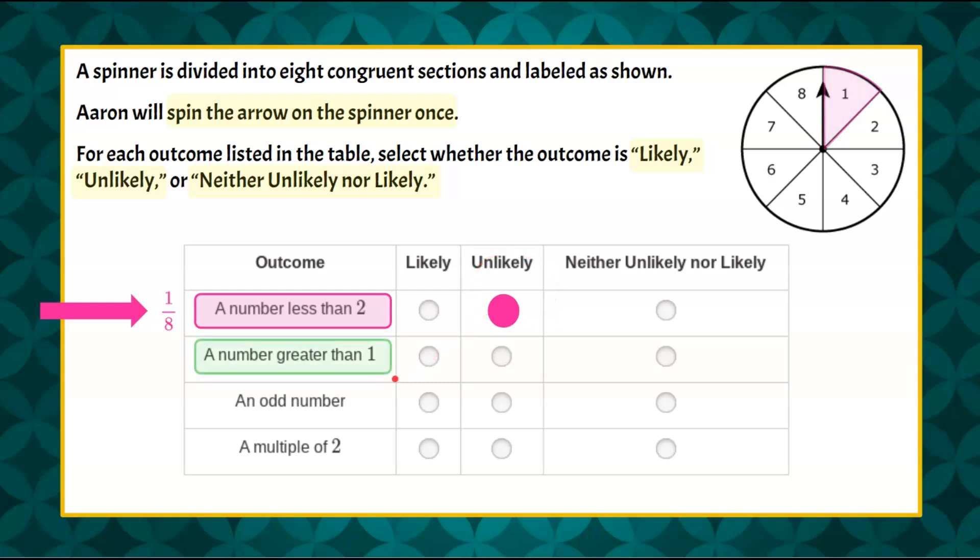Let's move on to the second expected outcome. So if we look at our spinner and we see our number one, and we consider all the numbers that are greater than one, we can see that seven of our sections on our spinner are greater than one.